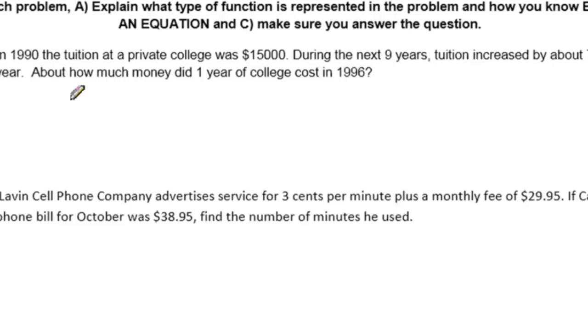Question number one. In 1990, the tuition at a private college was $15,000. During the next nine years, tuition increased about 7.2% each year. About how much money did one year of college cost in 1996? Part A is to explain what type of function we have and how we know that.